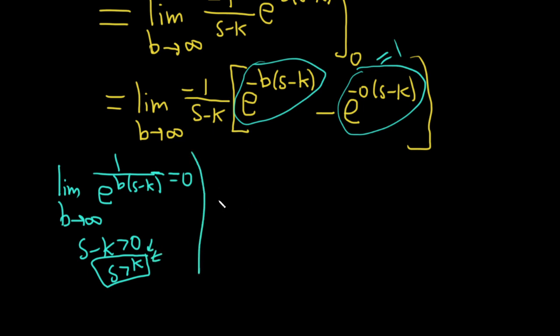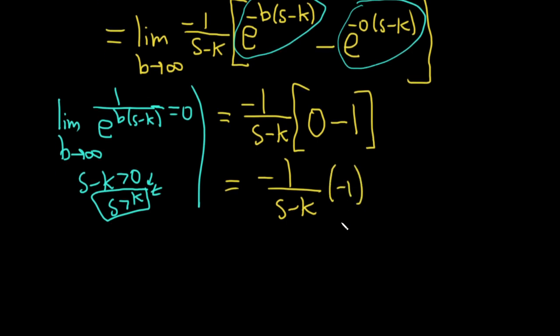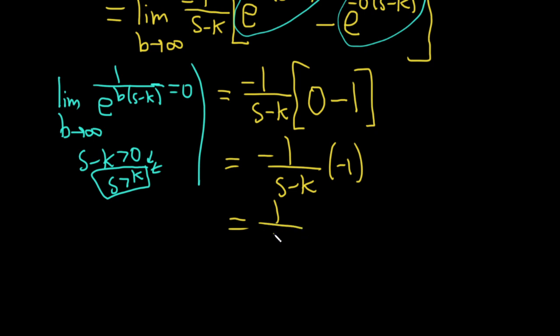So continuing with our limit, this is equal to, drop the limit sign, negative 1 over s minus k, bracket, and then this piece here we said was 0, and then minus 1. So really nice. It cleans up really nice after you take that limit, which makes it really cool. And then the last thing to do is just realize you can multiply these. So this is, this 0 goes away. This is negative 1 over s minus k times negative 1. And so this is equal to 1 over s minus k. This will be true as long as s is bigger than k. That's when it's true. So that's it. That's the final answer.